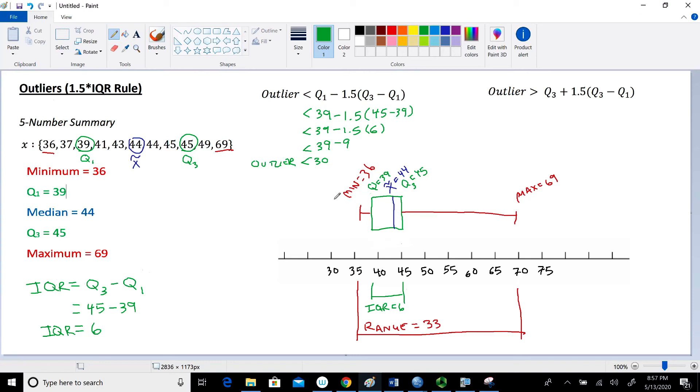So this value of 30 right there, that's referred to as the fence. Now, this typically isn't drawn in the picture. But the fence would be right here at the value of 30. If any values exceed that to the left, those would be considered outliers in terms of a value within the data set.